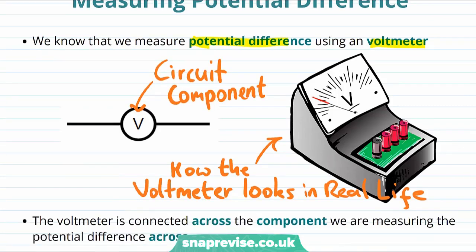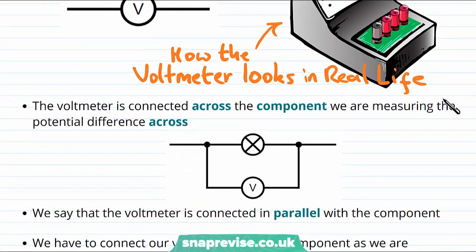Now you may know that if we want to measure the current for a component we put an ammeter in series with it. However, if we want to know the voltage across a component, the voltmeter needs to be connected across that component.